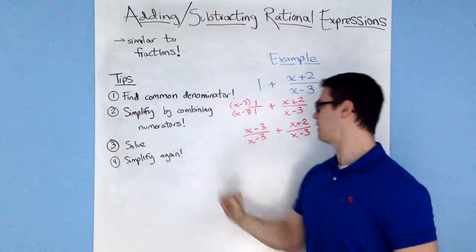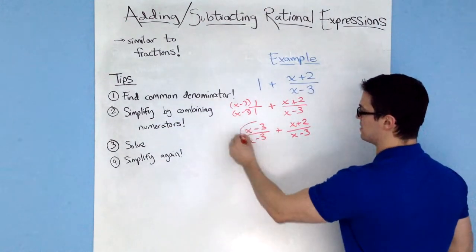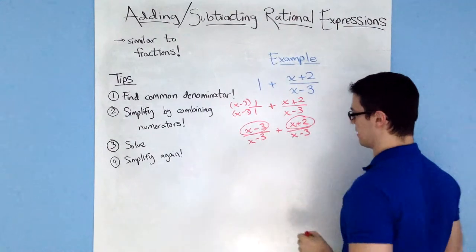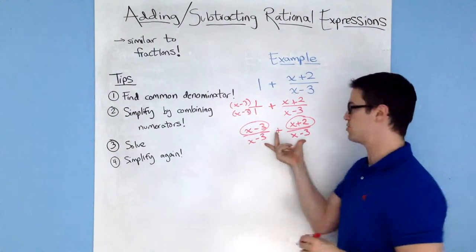Next, simplify by combining numerators. So I'm going to combine this numerator with this numerator. I can add these together because I have common denominators now.